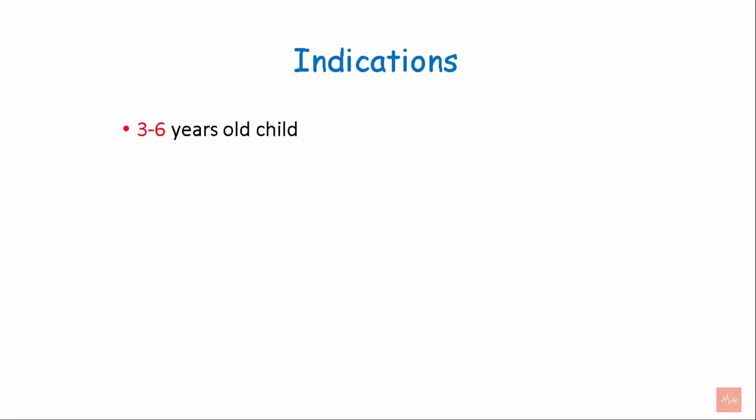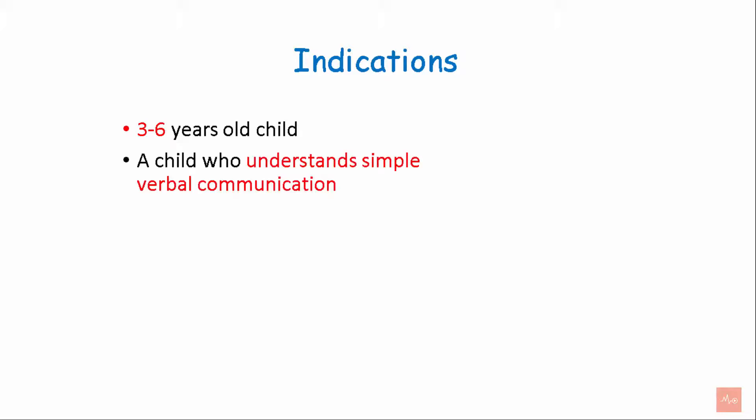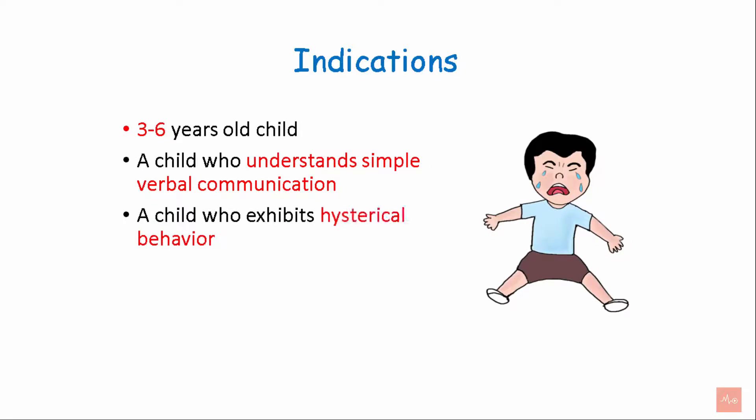The indications of this technique: the child's age should be between 3 to 6 years. The child should understand simple verbal communication. It is indicated for a child with hysterical behavior or a child with uncontrollable behavior.